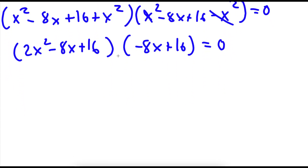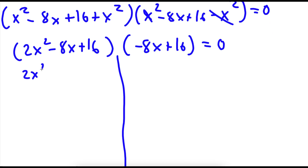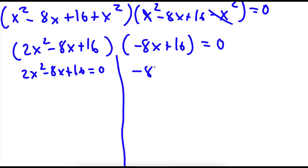Now this gives me two equations: I have 2x squared minus 8x plus 16 is equal to 0, and I also have negative 8x plus 16 is equal to 0.